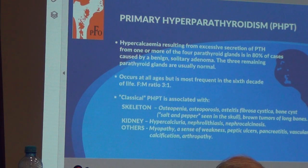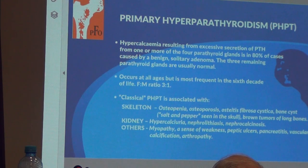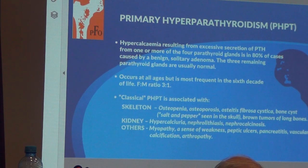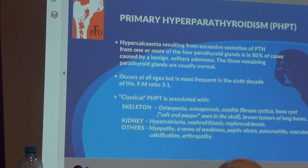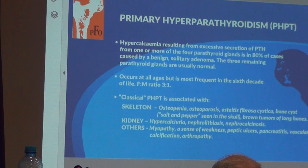Primary hyperparathyroidism occurs at all ages but is most frequent in the sixth decade of life. Classical disease is associated with skeletal manifestations: osteopenia, osteoporosis, osteitis fibrosa cystica, bone cysts, and brown tumors of long bones. From the kidney side: hypercalcemia, hyperthyroidosis, and nephrocalcinosis. Among others: myopathy, sense of weakness, peptic ulcer, pancreatitis, vascular calcification, and arthropathy.